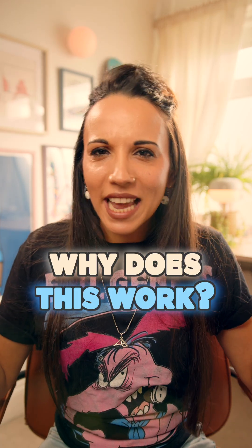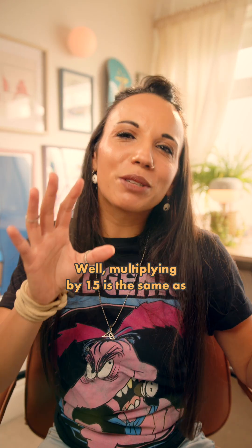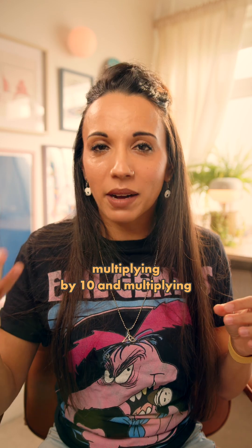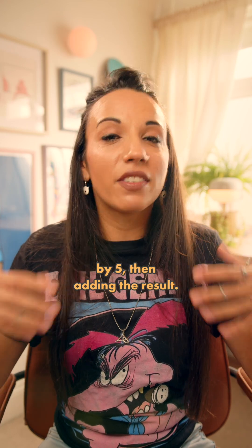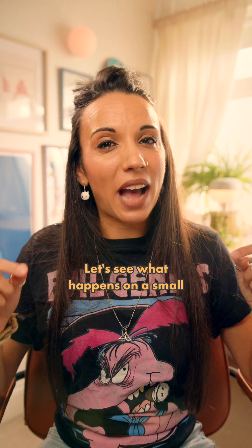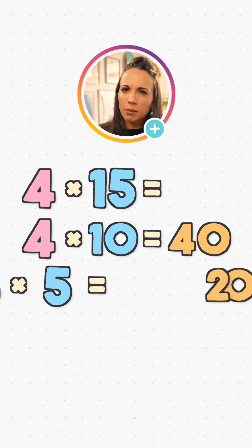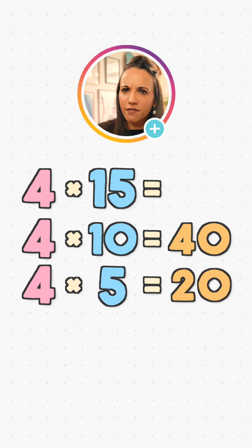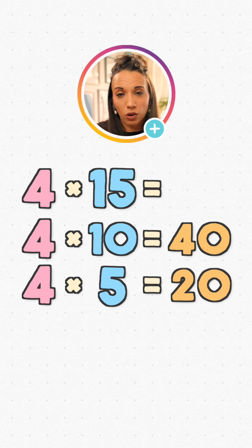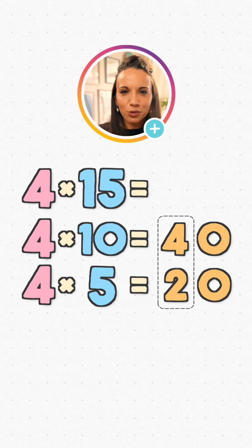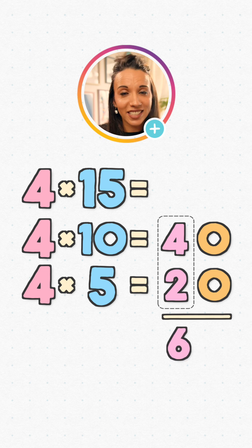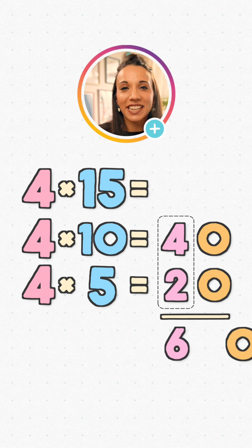But why does this wonderful technique work at all? Multiplying by 15 is the same as multiplying by 10 and multiplying by 5, then adding the results. Let's see what happens on a small example, like 4 times 15. 4 times 10 is 40, and 4 times 5 is going to be half of that — 4 lots of 5 is half of 4 lots of 10, so that's 20. Now look: our original number 4, plus half of it — 2 — gives 6, which then gets multiplied by 10 to make 60.